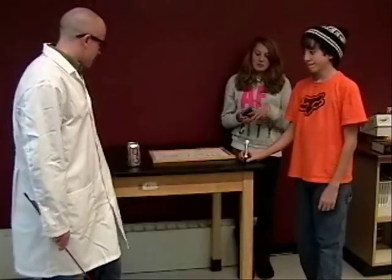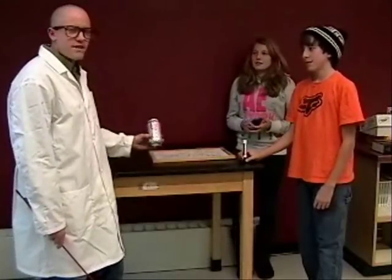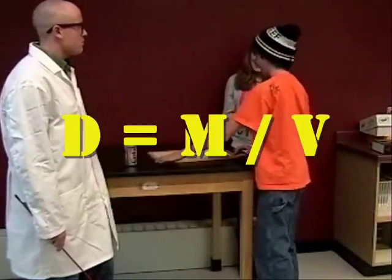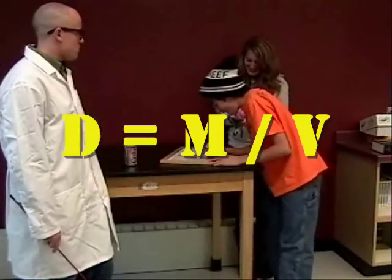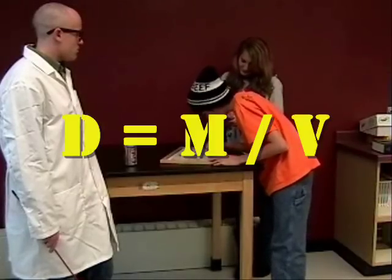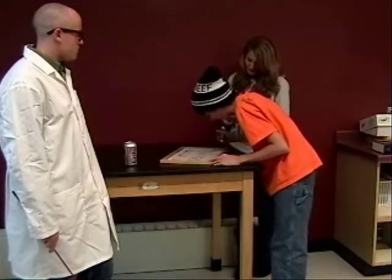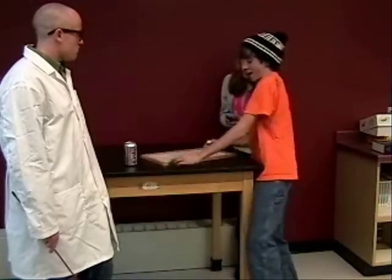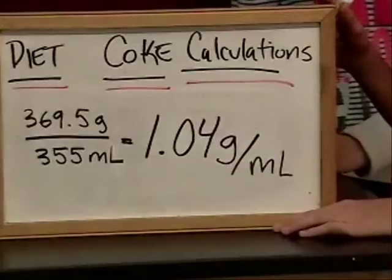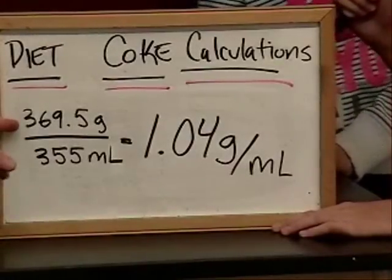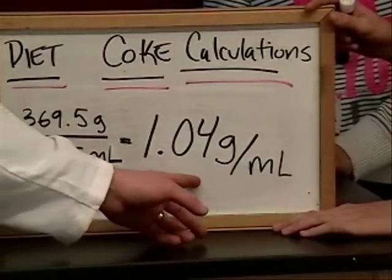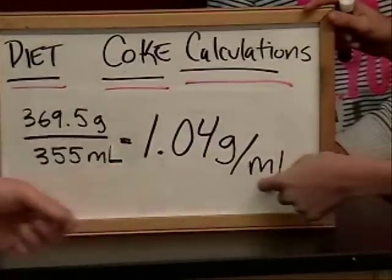Okay, guys, it's time to get down here and figure out the density of this Diet Coke. All right, Brooke, let's get down with some calculations here. We took our mass, divided it by our volume, and calculated the density of the Diet Coke can to be 1.04 grams per milliliter. Great job.